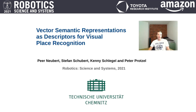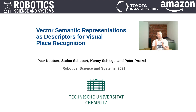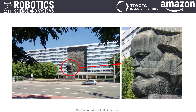My name is Per Neubert and I will talk about joint work with Stefan Schubert, Kenny Schlegel and Peter Potzel, and our approach to encode all the semantic entities of an image into a single numerical vector that can then serve as a descriptor — for example, for place recognition. We are all with Chemnitz University of Technology, located in the city of Chemnitz in Germany.